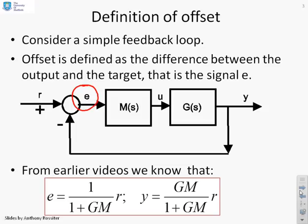And when we're talking about ramps we're talking about signals r which are 1 over s squared. That's clearly a unit ramp. Ramps can have other magnitudes but that's not really needed for this video.